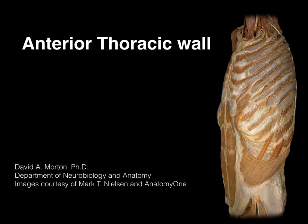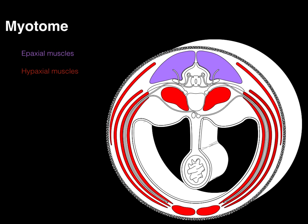Let's talk about the anterior thoracic wall. The anterior thoracic wall muscles are made up of the myotomes from those thoracic region somites, and those myotomes become epaxial and hypaxial muscles. The epaxial muscles formed one of the seven layers, which we covered in the first week. Our focus is going to be on the six muscle layers of the hypaxial group.